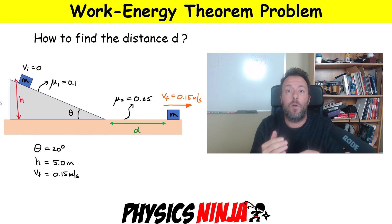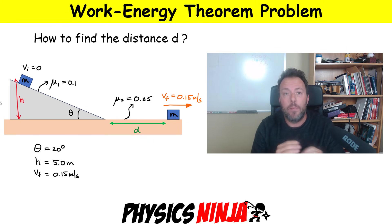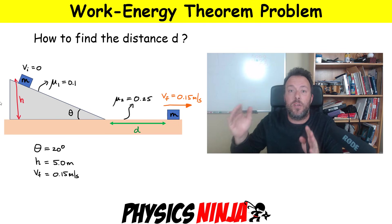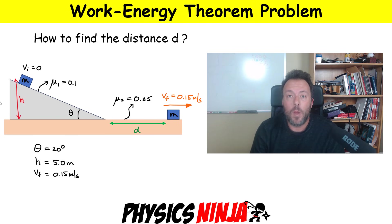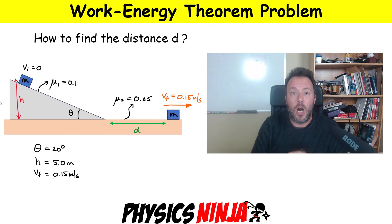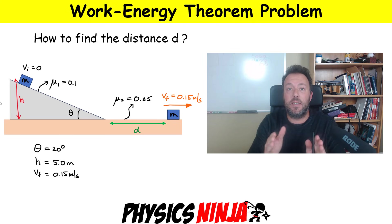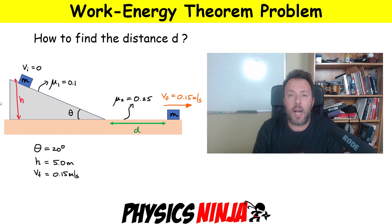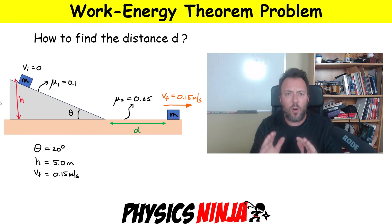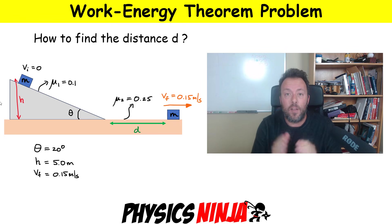In that flat section the coefficient of friction is different from the ramp. You're going to slide a certain distance. We're not going to make the block go all the way to rest — we observe that after it slides a certain distance d, the speed of the block is 0.15 meters per second. Given all this information, how would you find what this distance d is on the flat section?